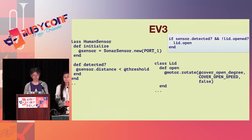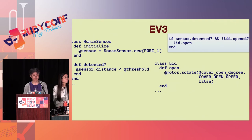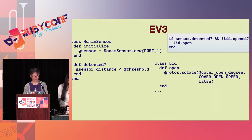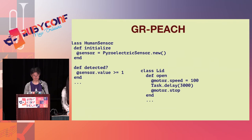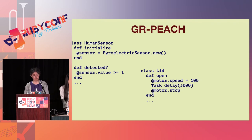Let's talk about the implementation of the detected method and the open method. The detected method determines if there is a person, and the open method opens the lid. For EV3, this sensor measures the distance to a detected object and compares the acquired value with a threshold, returning the result. When the open method is called, it turns the motor by a specific angle. On the other hand, the IR sensor connected on GR Peach returns whether a human is detected as 1 or 0, then converted to true or false.